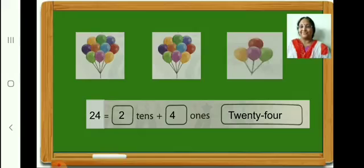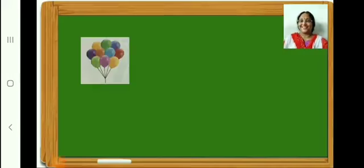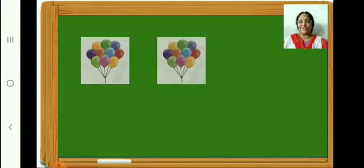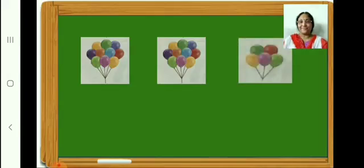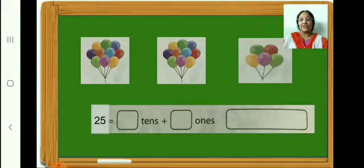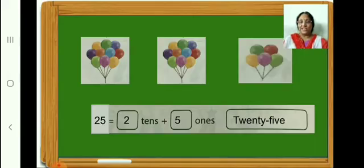Let us go to the next one. How many balloons are there in this box? Ten. In this box? Ten. In the third box? Five. In all, 25 balloons. 25 is equal to 2 tens plus 5 ones. Write along with teacher. Now we are going to write the number name 25: T-W-E-N-T-Y-F-I-V-E. Finish writing? Very good.